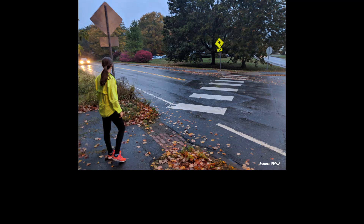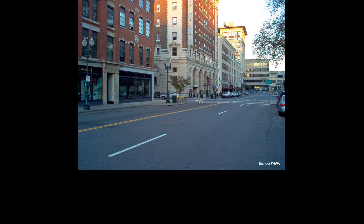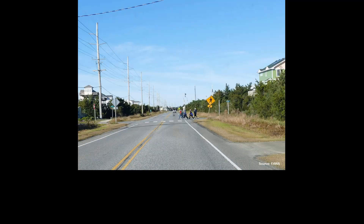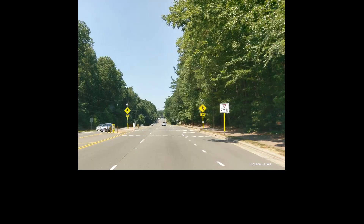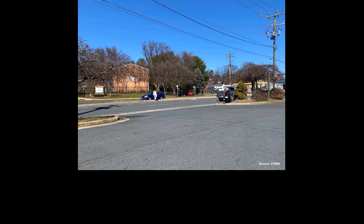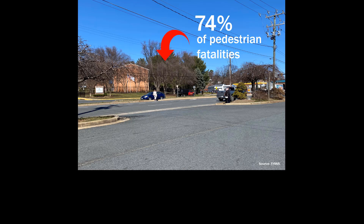An uncontrolled pedestrian crossing occurs where sidewalks or designated walkways intersect a roadway at a location where no traffic control is present. An uncontrolled crossing can be at an intersection or a mid-block location, as shown here. Mid-block crossings are a prime opportunity for pedestrian safety countermeasures. In 2018, around 74% of fatal pedestrian crashes occurred at mid-block locations.